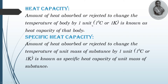Specific heat capacity has a similar definition but it is related to the unit mass of a substance. The amount of heat absorbed or rejected to change the temperature of a unit mass of a substance by one unit — that is one degree Celsius or one Kelvin — is known as the specific heat capacity of a unit mass of a substance.